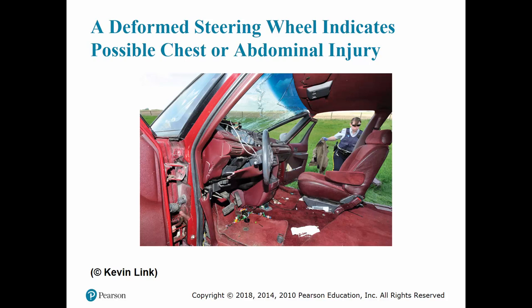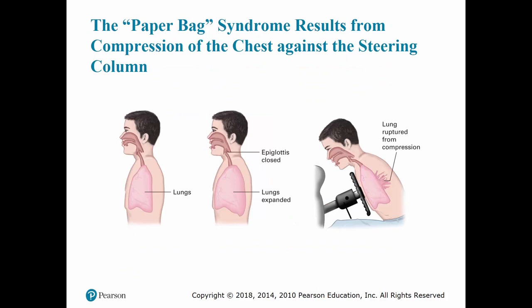Patients in a frontal collision who are unrestrained can come in contact with the steering wheel or the dashboard as the airbag deploys. The explosive force of the airbag could potentially cause chest injury as well. In that paper bag syndrome, the person takes a deep breath, fills up the lungs, epiglottis closes, they hit the chest and it becomes compressed just like a paper bag — rupturing the lung and causing a severe pneumothorax.